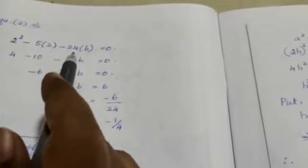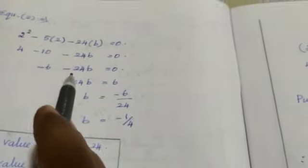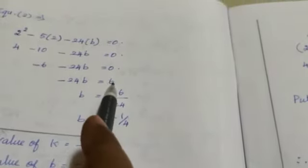2 square 4 and 5 2s are 10 minus 24 b equal to 0. Simplify these, 4 minus 10 minus 6 minus 24 b equal to 0. Then minus 24 b equal to, bring this minus 6 to the right hand side, it will become plus 6.